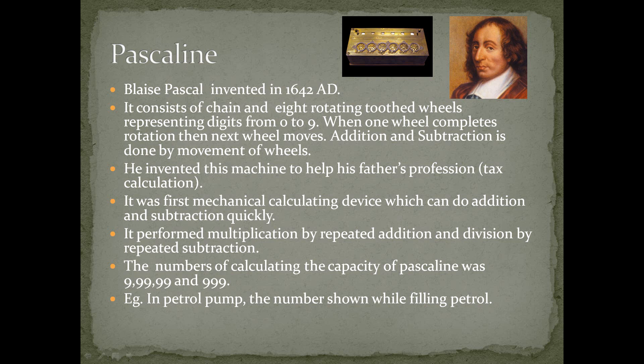It was the first mechanical calculating device which can only add and subtract, but it can quickly do this. It performed multiplication by repeated addition and division by repeated subtraction. The calculating capacity of Pascaline was 9 crore 99 lakh 99 thousand 999.